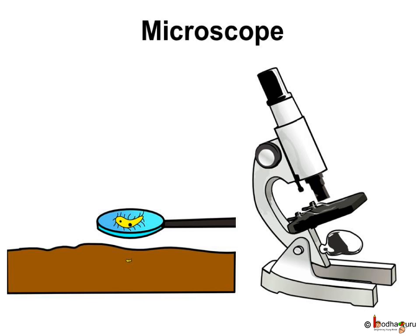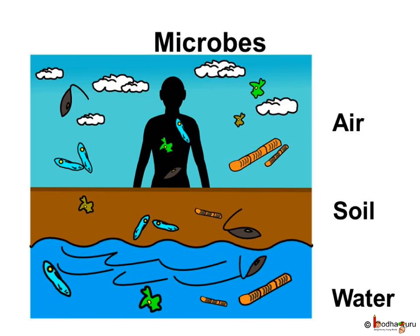So, how can we see them? We have to use a microscope. There are millions of tiny organisms present in the air, in the water, and in the soil, and even inside our body. They are seen through a microscope, hence called microbes.